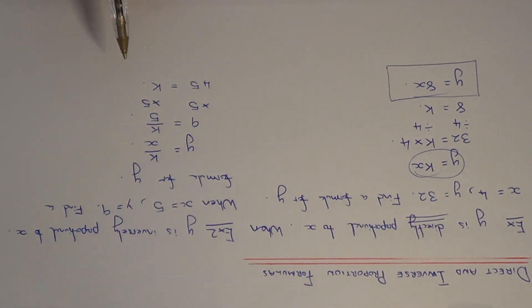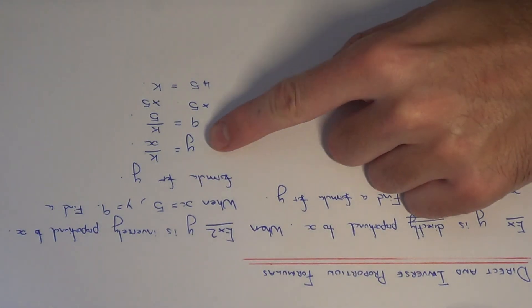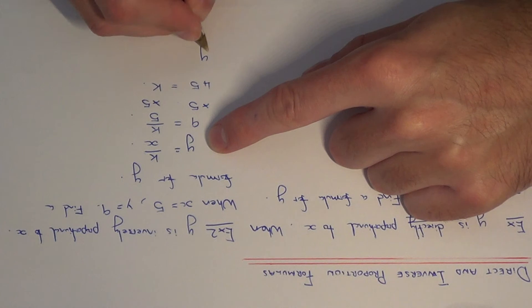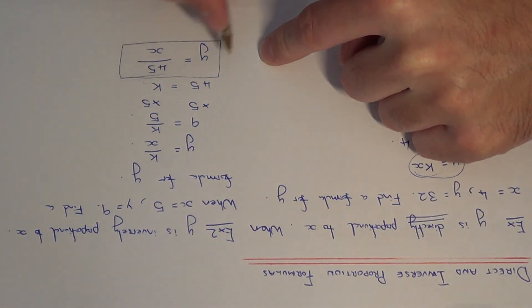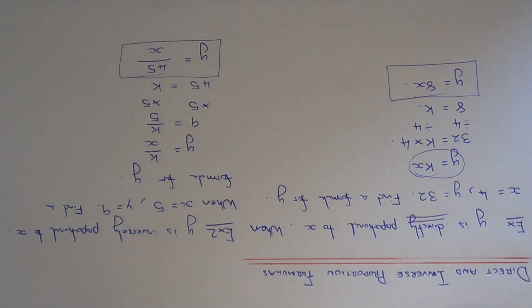We just need to write down our final answer, so we change the k to 45 at the top. Our final formula is y equals 45 over x. This is our formula for y in terms of x. Thanks for watching.